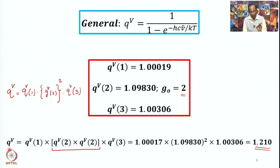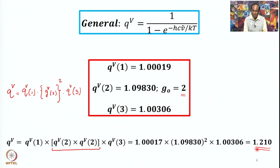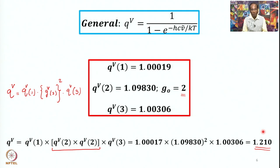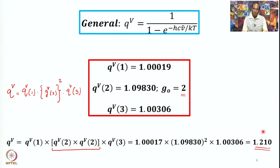Each normal mode of vibration gives rise to its own partition function, and once you know the value for each mode, you use the multiplicative rule to get the overall vibrational contribution. Since the experimental temperature of 298 K is lower than the vibrational temperature for each normal mode, you do not expect the overall number to be much different from 1. In this case it is 1.2. As a general rule, you expect translational contribution to be highest, followed by rotational, and now vibrational — which is the next lower.